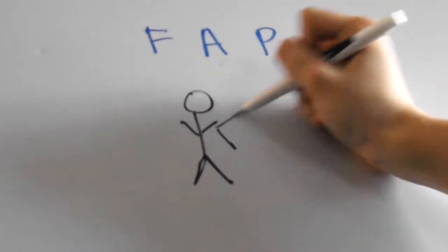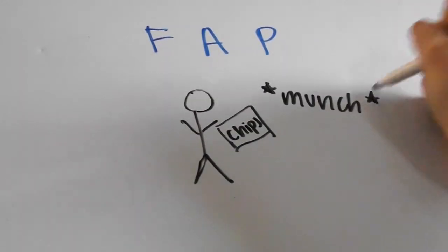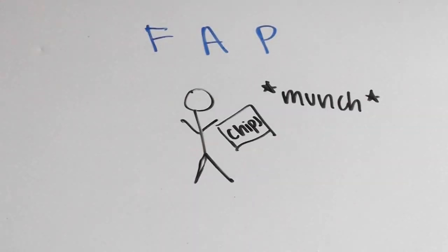So first of all, fixed action patterns are motions that organisms go through and they're always carried out to completion. They're pretty much instinctive actions, and a common example of this is with the stickleback fish.